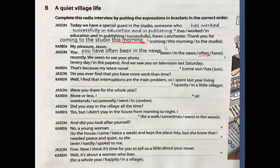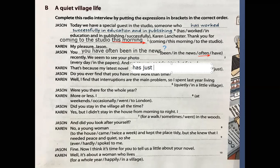Next: 'We saw you on television last Saturday.' — 'That's because my latest novel has just come out.' The word 'just' goes between the auxiliary 'has' and the main verb 'come out': 'My novel has just came out.' — correct.